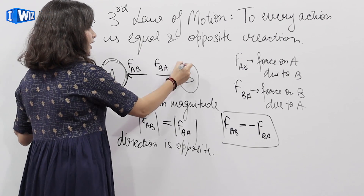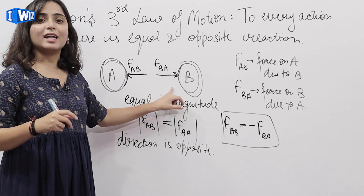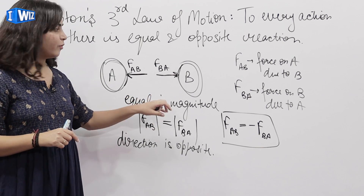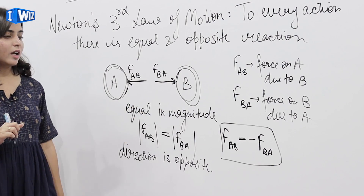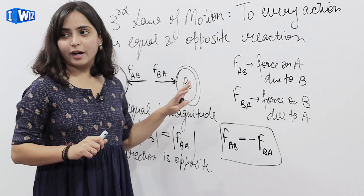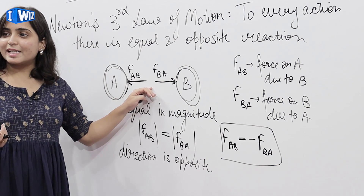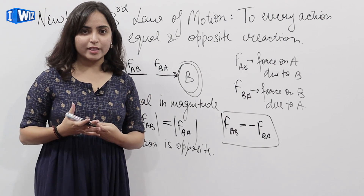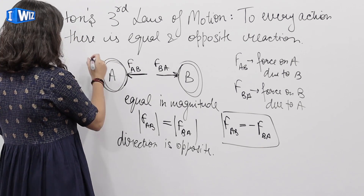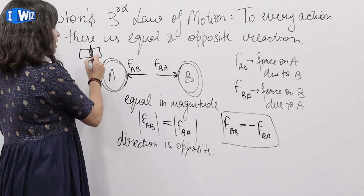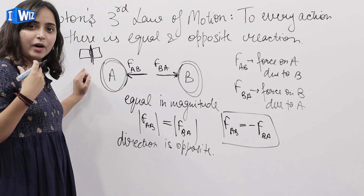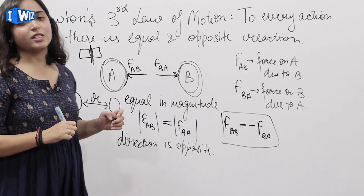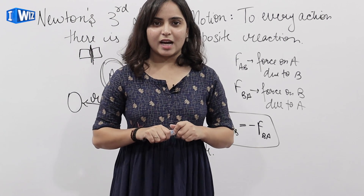Body A पर act कर रहा है, body B पर act कर रहा है — दोनों bodies पर different act कर रहा है. Cancel तब होता है जब reaction एक ही body पर act करता है, लेकिन these are acting on two different bodies, therefore ये reaction cancel नहीं होगा. Newton's 3rd law को applicable होने के लिए contact की ज़रूरत नहीं है — ये ज़रूरी नहीं कि दो bodies आपस में contact में हों. Newton's 3rd law वहाँ भी applicable है जब bodies contact में नहीं हैं.